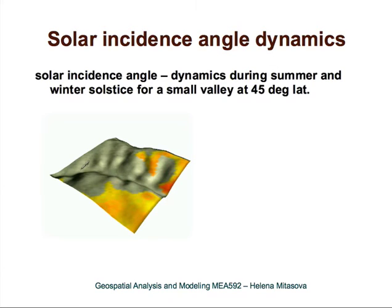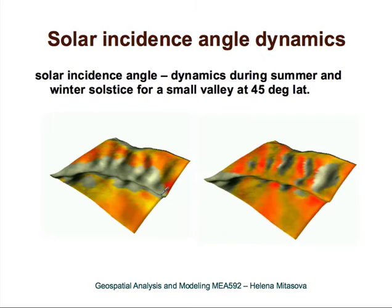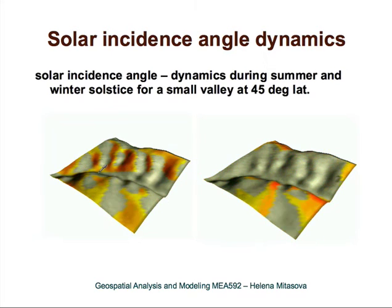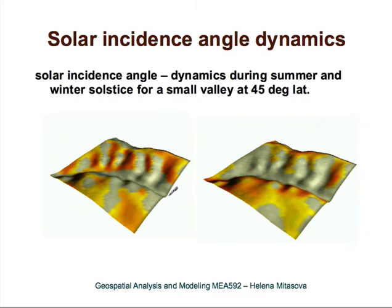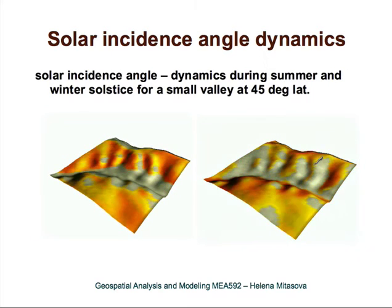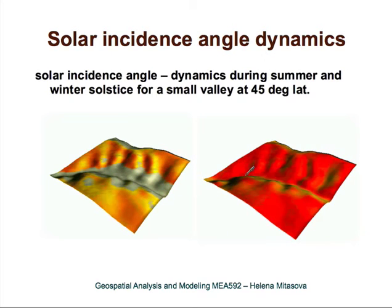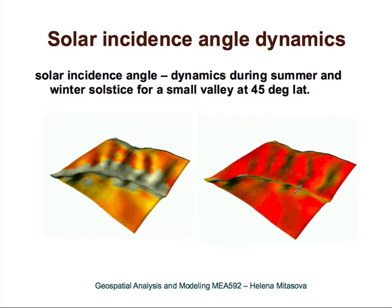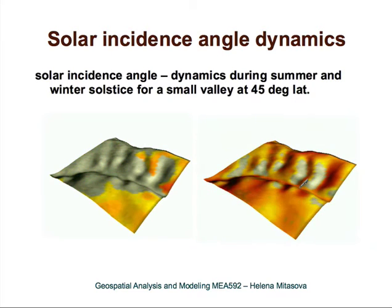You could see that this valley never got any direct solar radiation during winter. This is the same area during the summer. You can see how some of these areas, due to cast shadows, never get any sun during the winter. During the summer, the entire area gets direct solar radiation, but it greatly varies during the day.